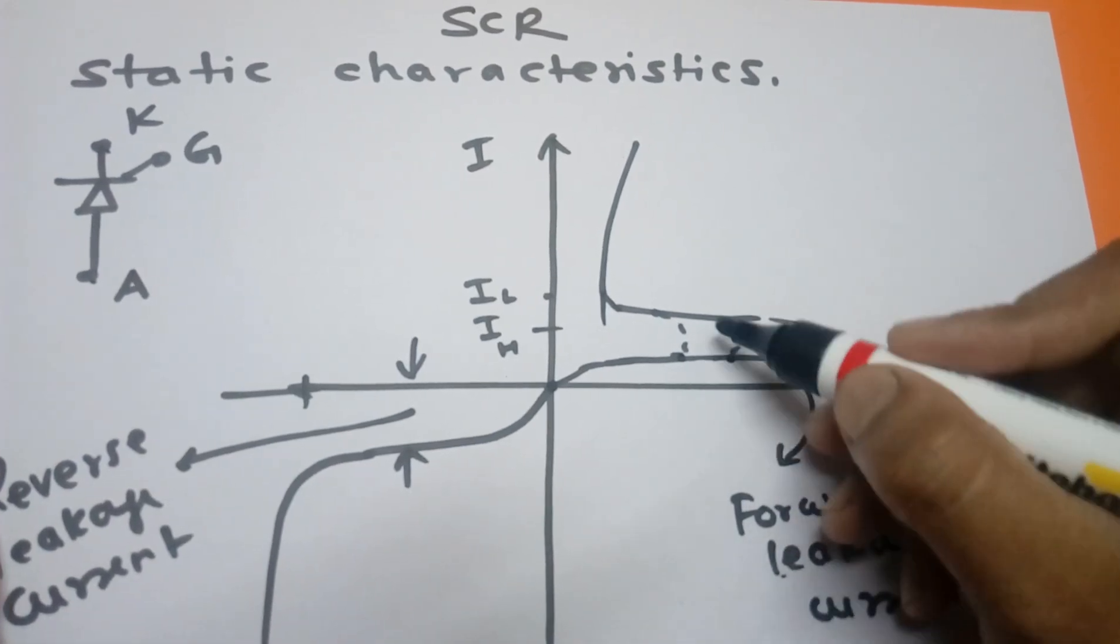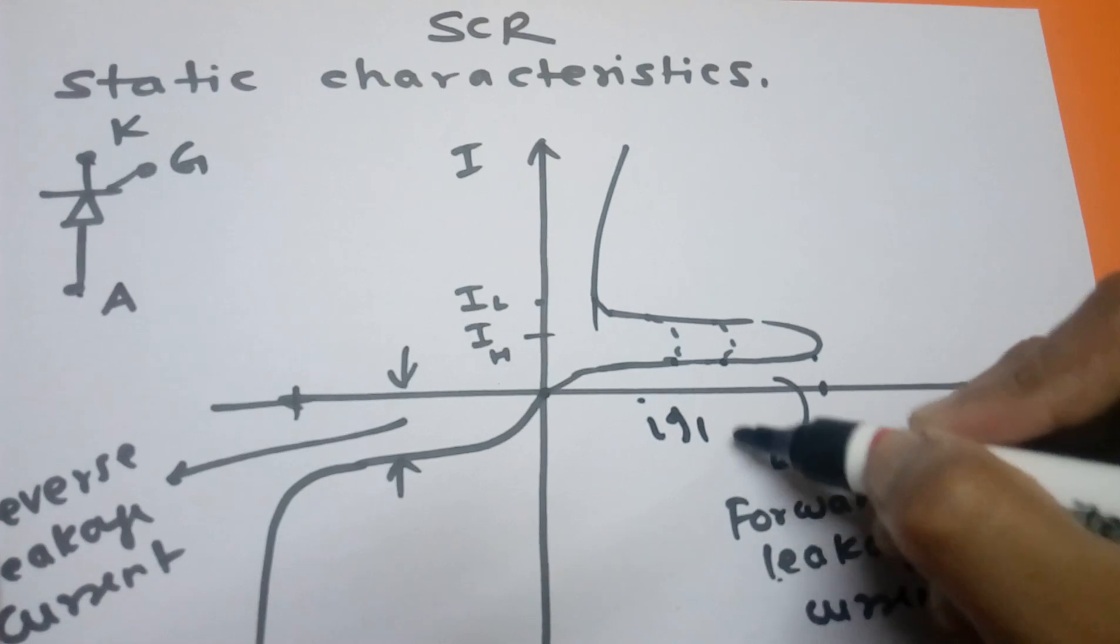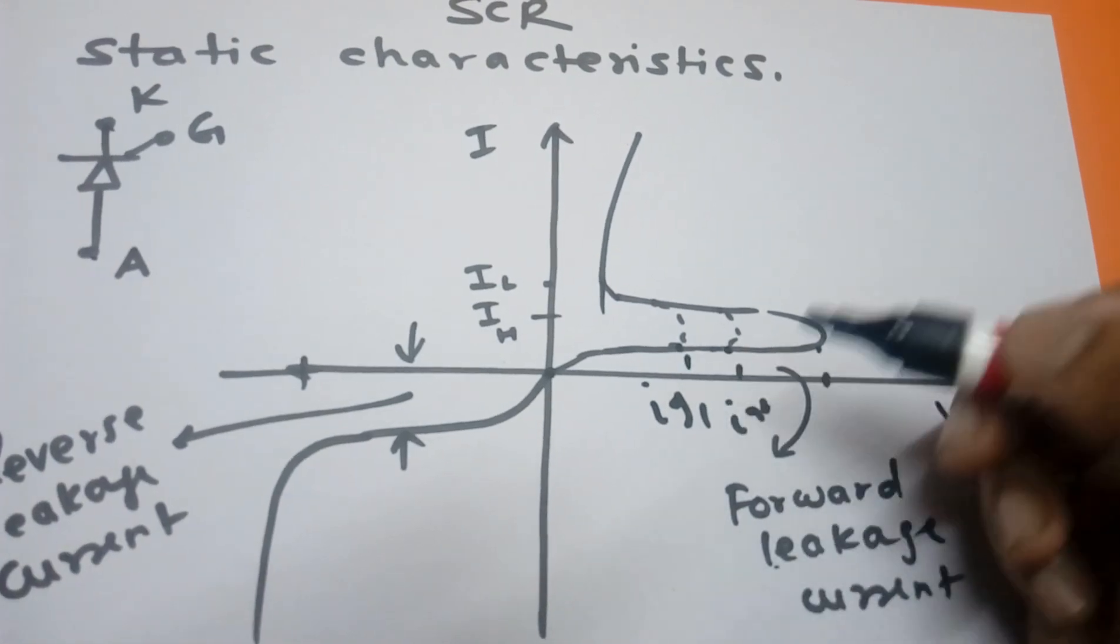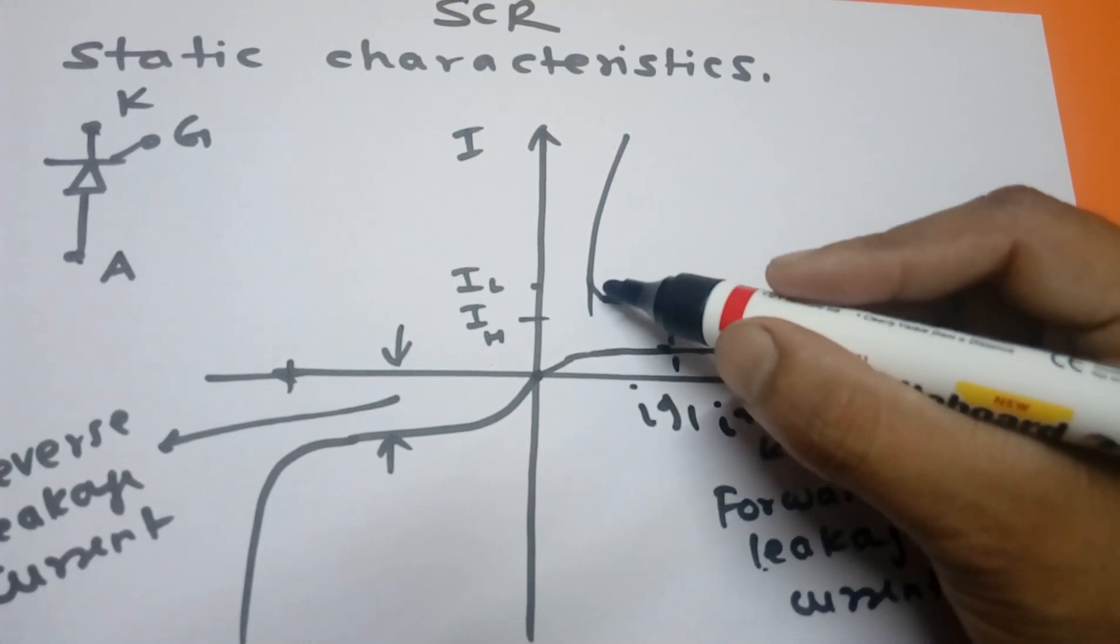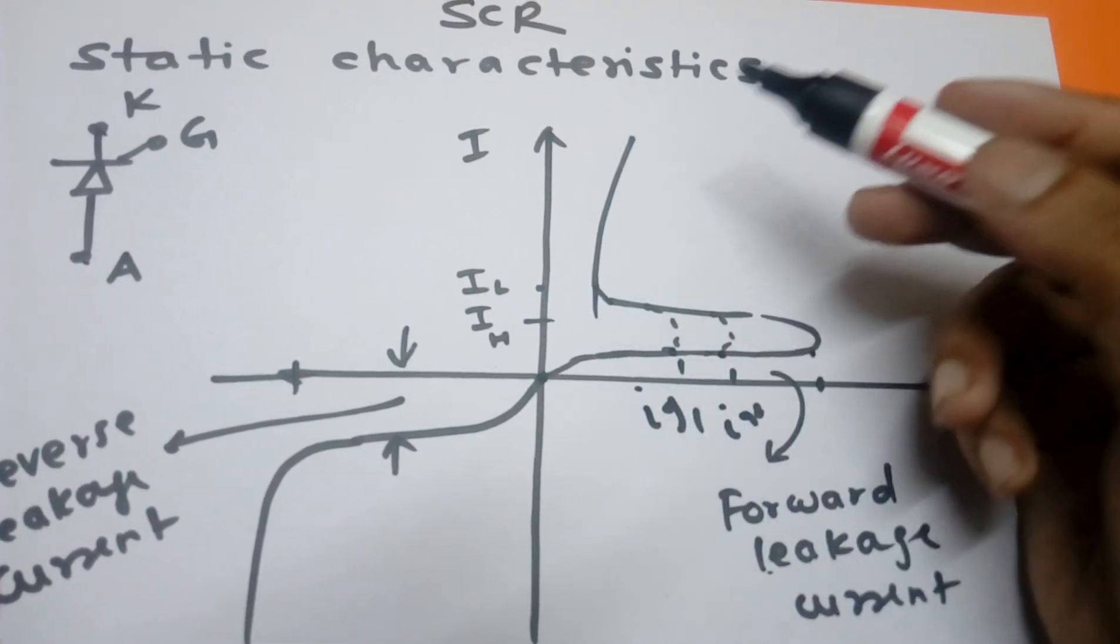We can say this is IG1 and IG2. When IG1 gate current is more than gate current IG2, the current will reach up to the maximum value.